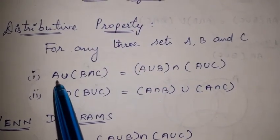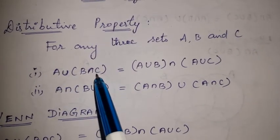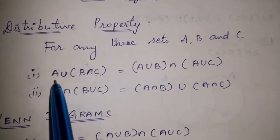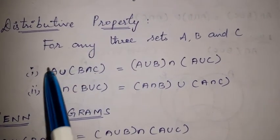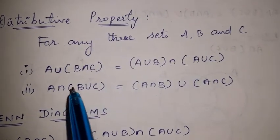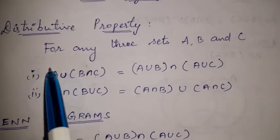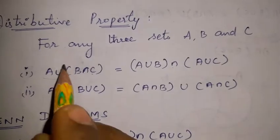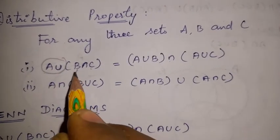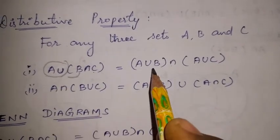The left hand side reads A union B intersection C. We use the left hand side to derive the right hand side. First, we write A union B.